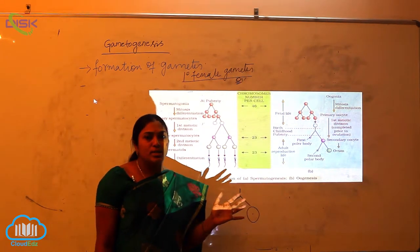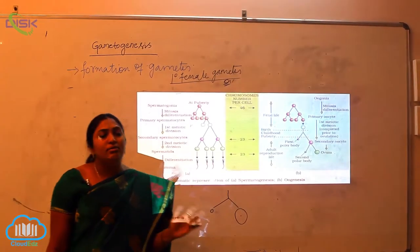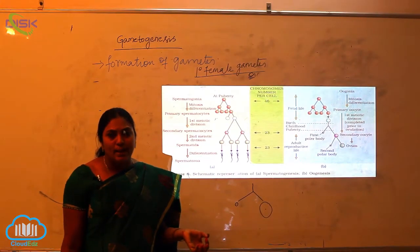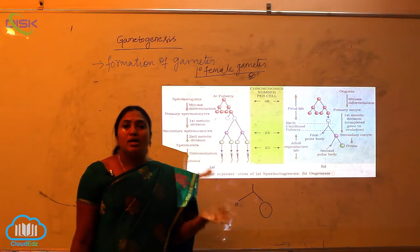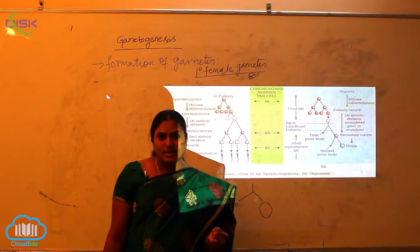If fertilization does not occur, this ovum will further change into the corpus luteum. The corpus luteum will have lots of antrum, which gives nourishment for the egg cell.